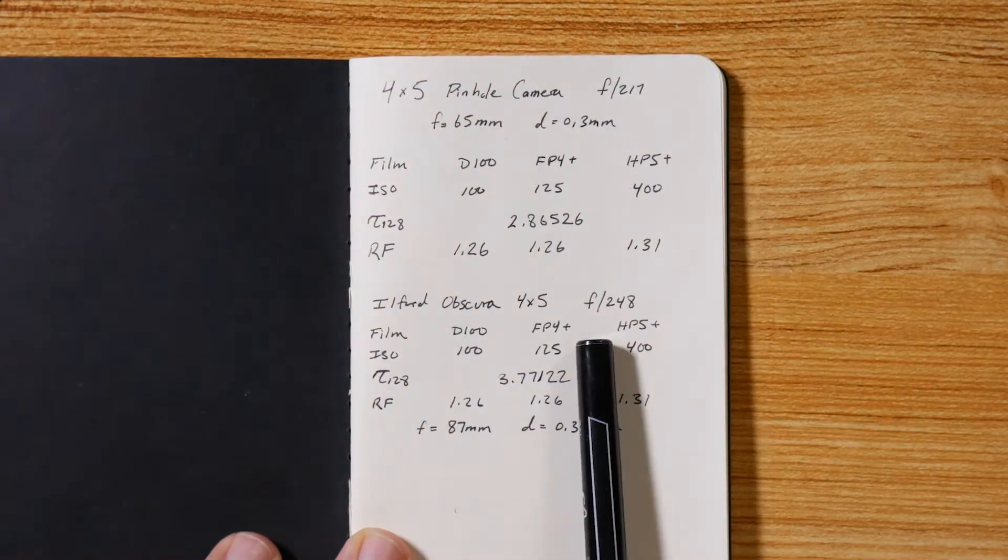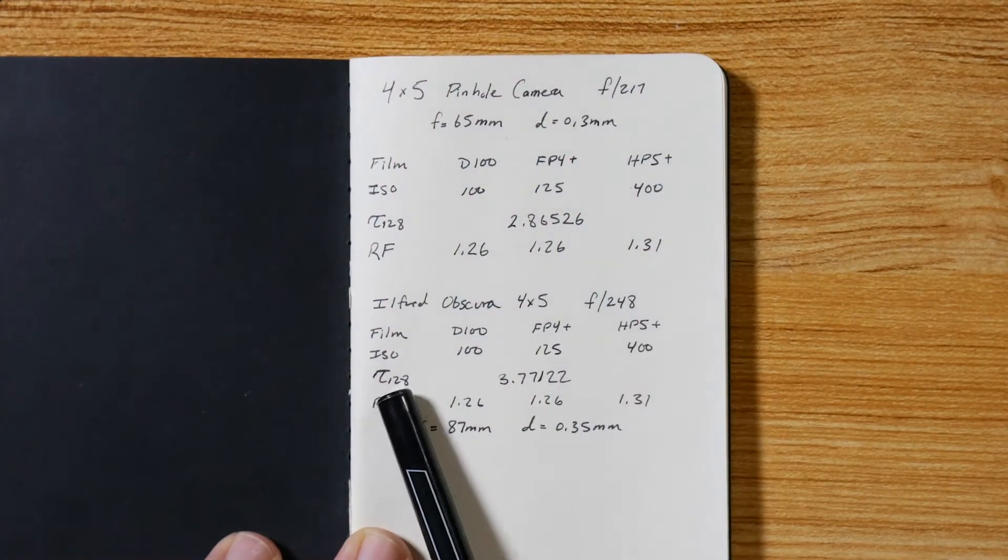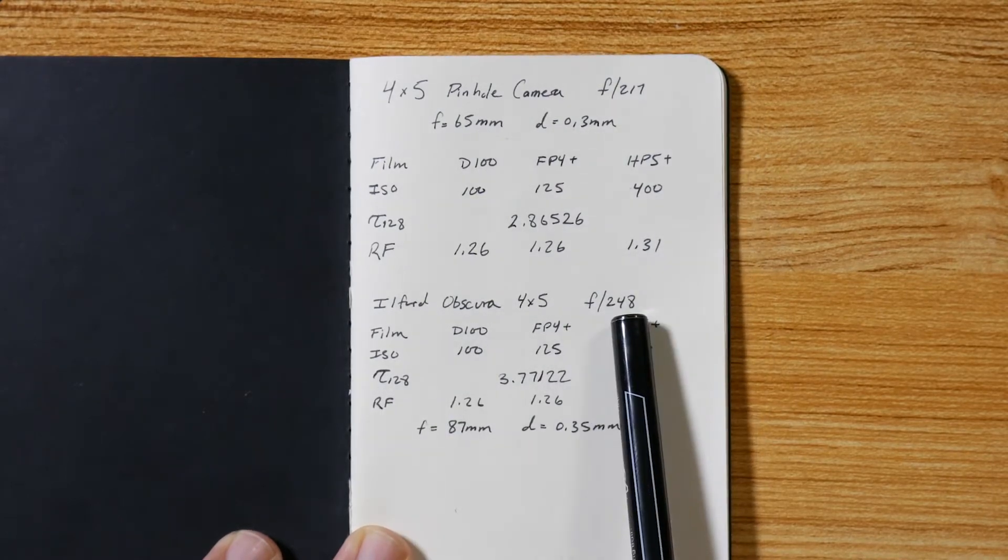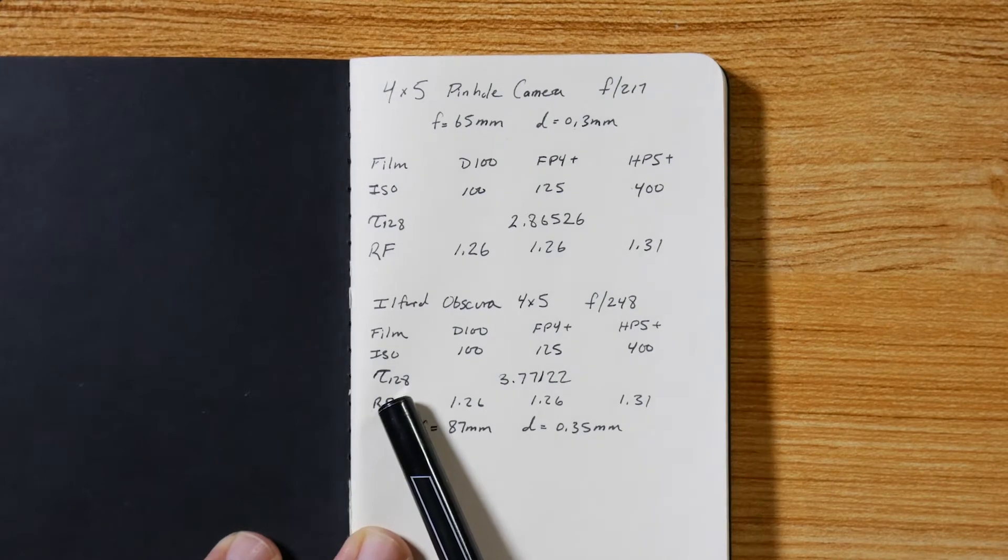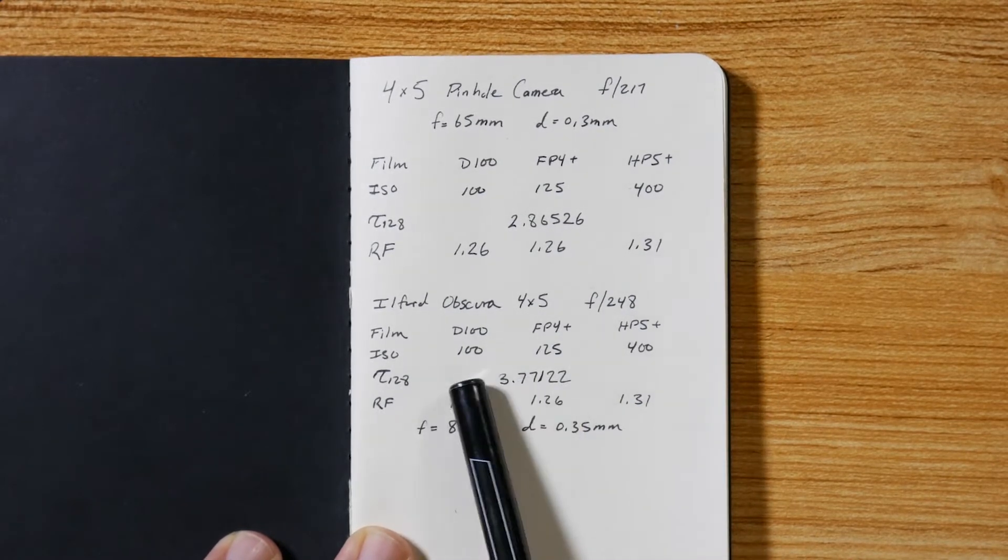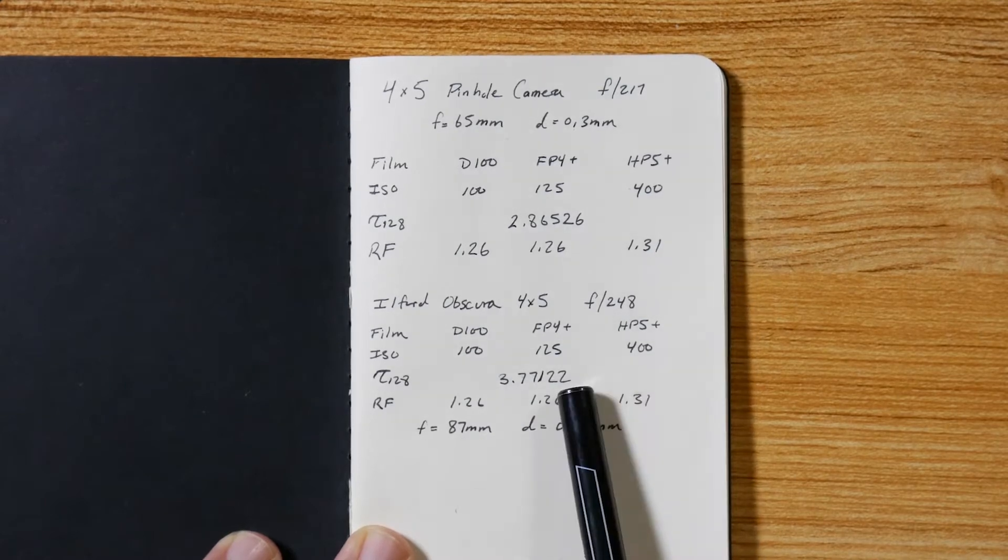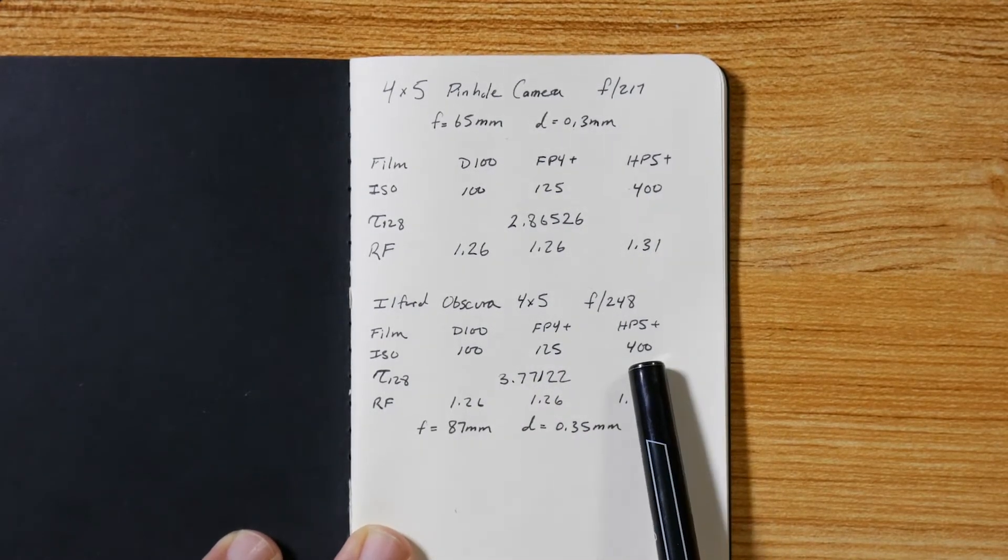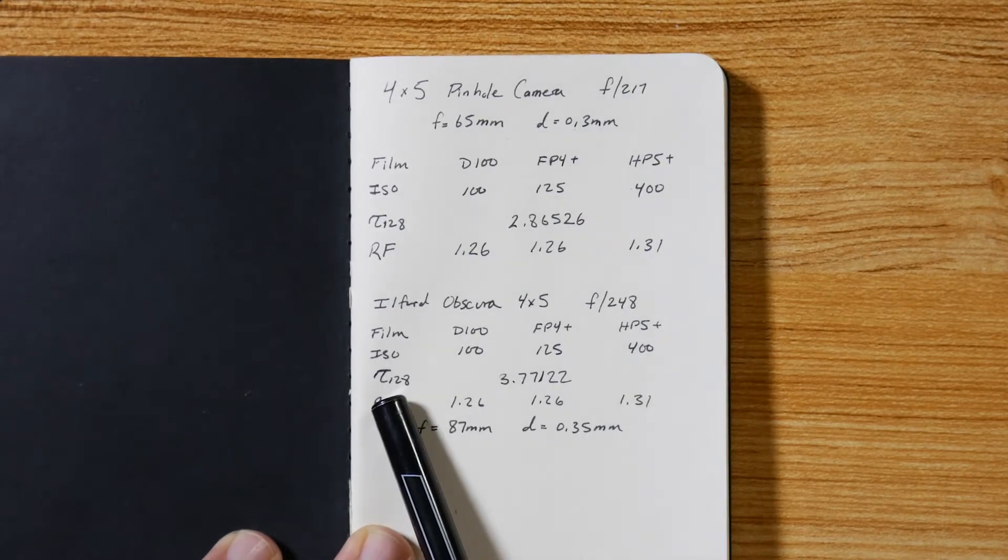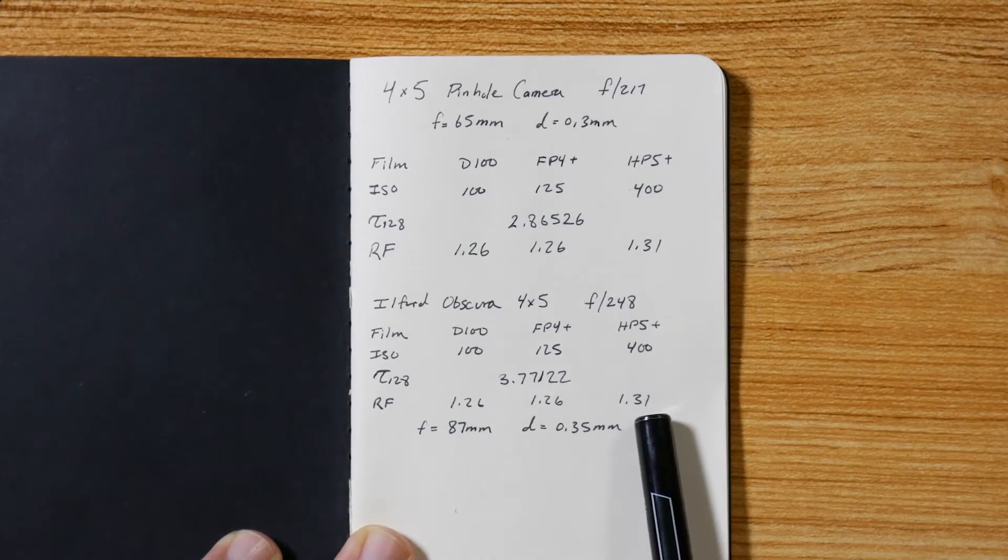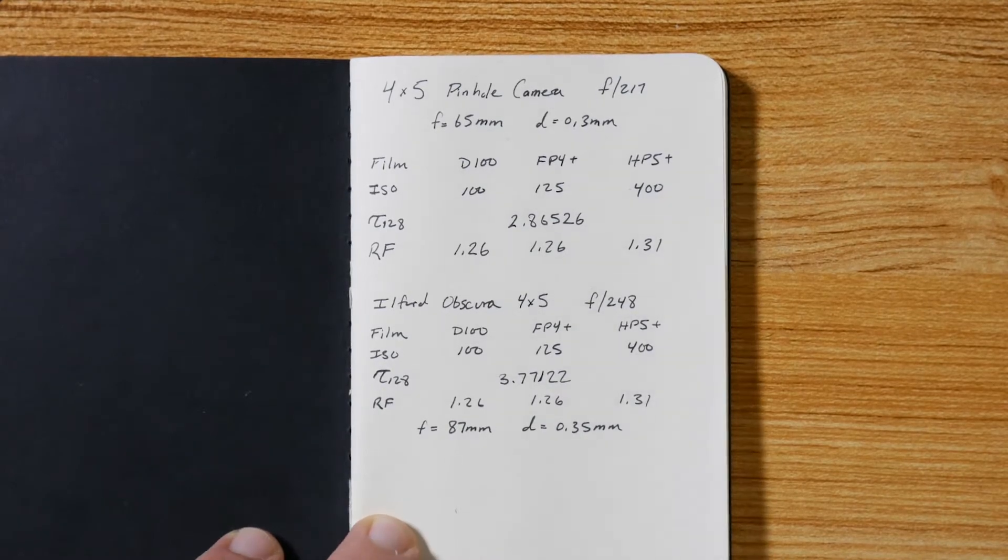Similar thing with the Ilford obscura camera, which is an f/248. I'm still using that metering at 128. The films are the same, so I take 248 divided by 128, square it, that gives me a new number. This factor is unique to this camera, but remember doesn't matter what ISO you have - this is the factor. Take a meter reading, let's say I'm using HP5, set my meter to 400, take a meter reading, see what it says for shutter speed at f/128, multiply by this, apply this factor if I need to.